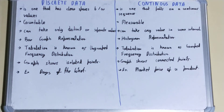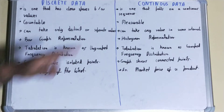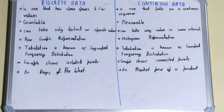In this video, we'll look at the difference between discrete data and continuous data. Discrete data has clear spaces between values — the values are totally distinct or individual. Continuous data, on the other hand, falls on a continuous sequence, meaning the values are interconnected with each other.